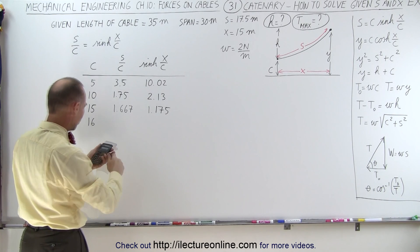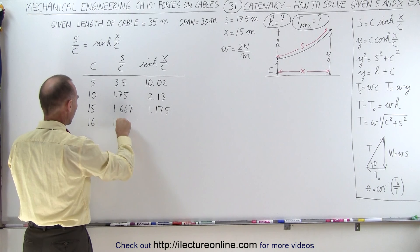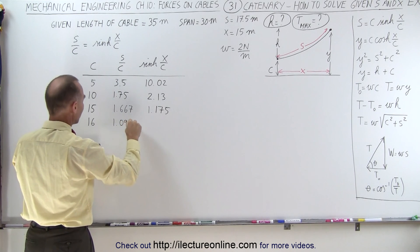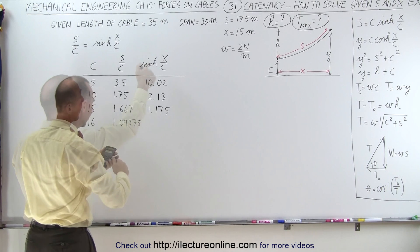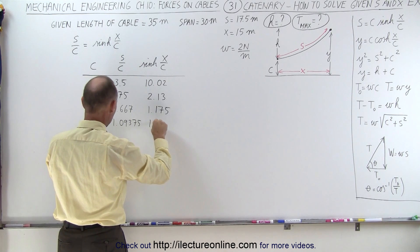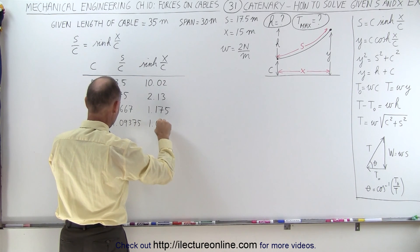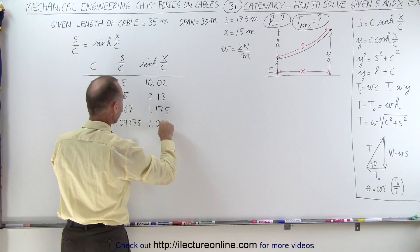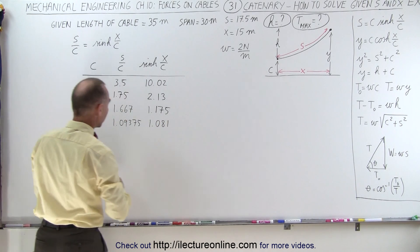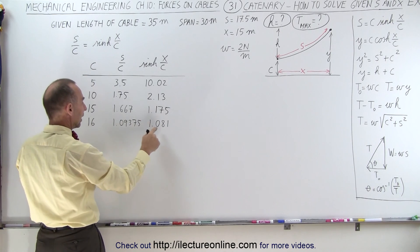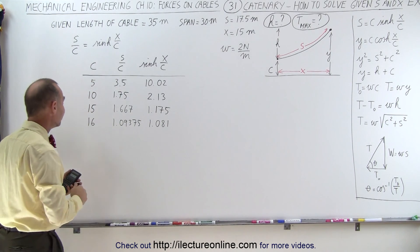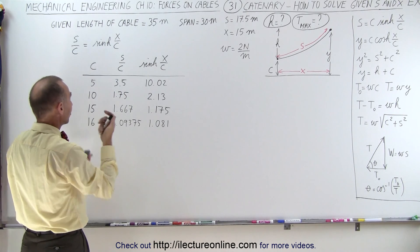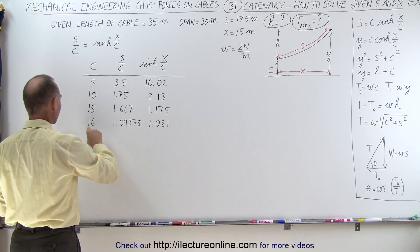Let's try 16 and see what that does for us. 17.5 divided by 16 is 1.09375, and X gives us 1.081. Here it was bigger than this, and here it is smaller than that. So we went a little bit too far. Let's try halfway in between. How about 15.5?